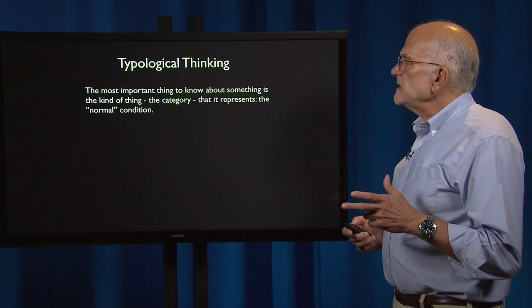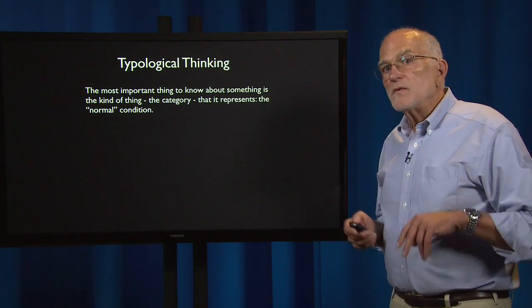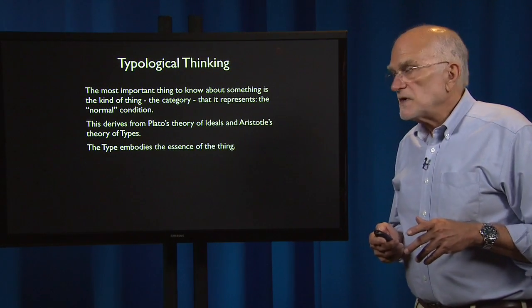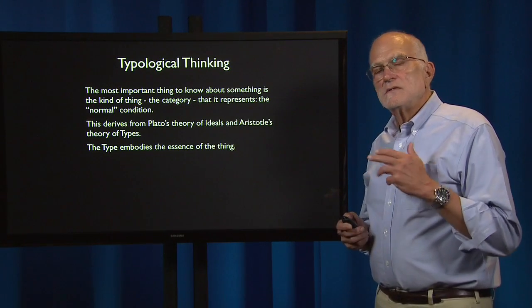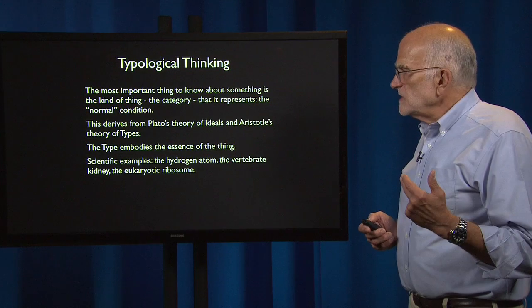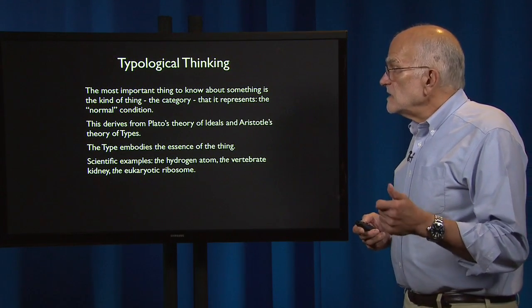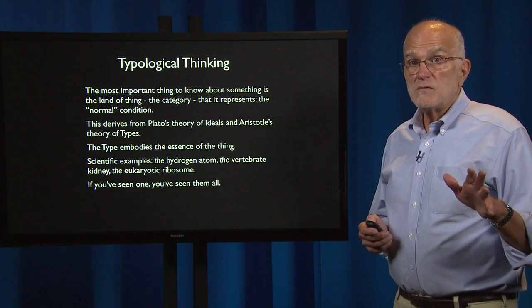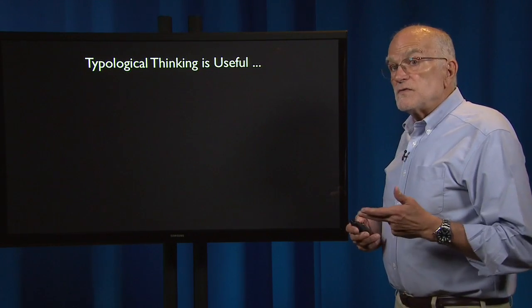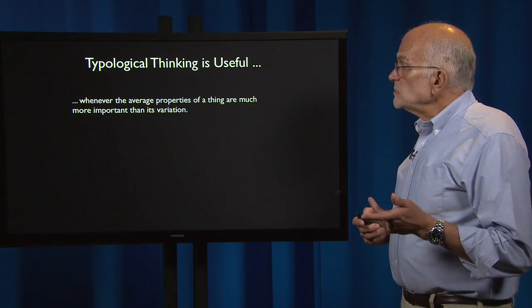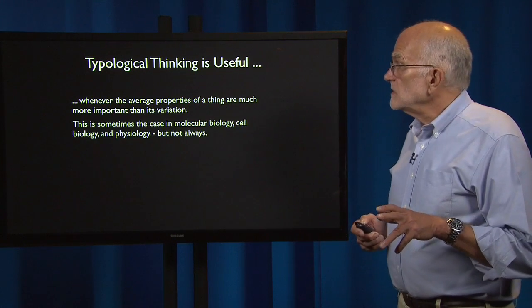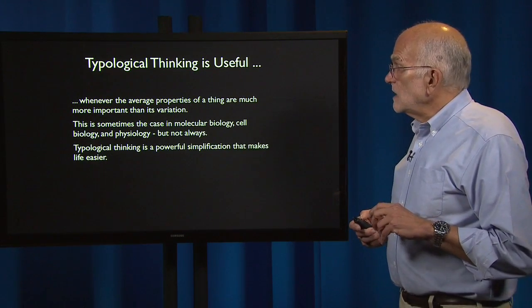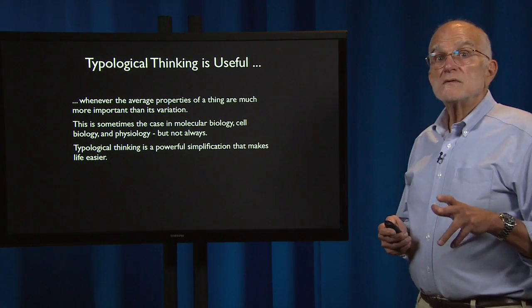In understanding arguments, we need to ask: what are the implicit assumptions being made, what different meanings are people assigning to words, and what issues are hanging unexpressed in the background? If one is thinking typologically, then the most important thing to know about something is the category it represents — the 'normal' condition. This derives from Plato's theory of ideals and Aristotle's theory of types. Scientific examples include the hydrogen atom, the vertebrate kidney, and the eukaryotic ribosome. In other words, if you've seen one, you've seen them all.